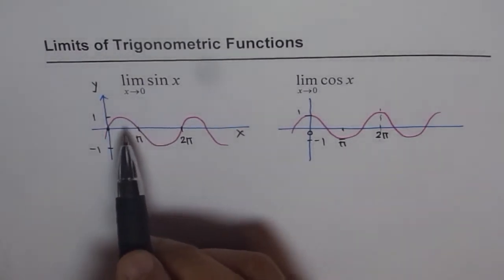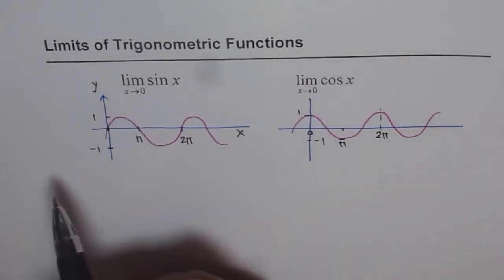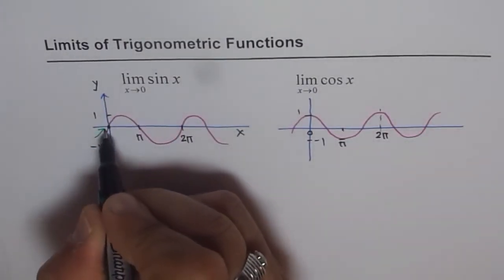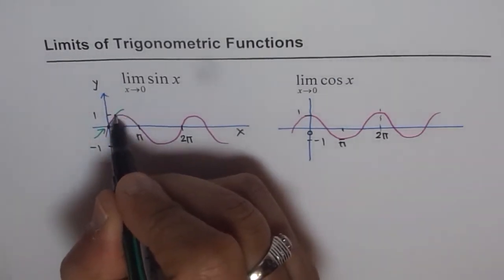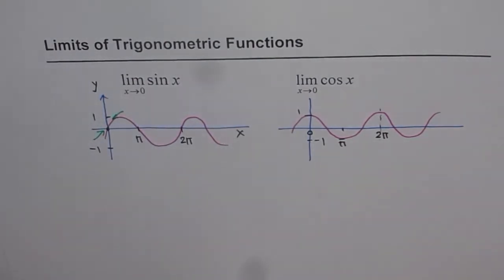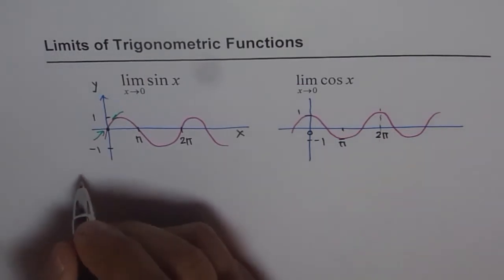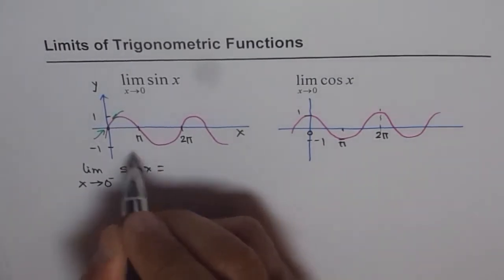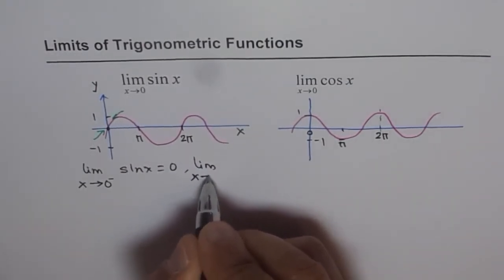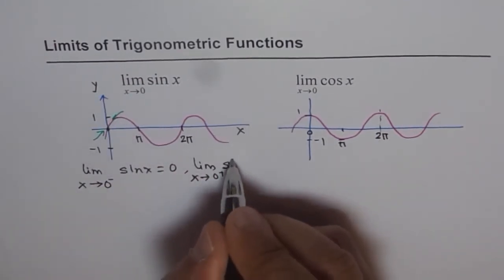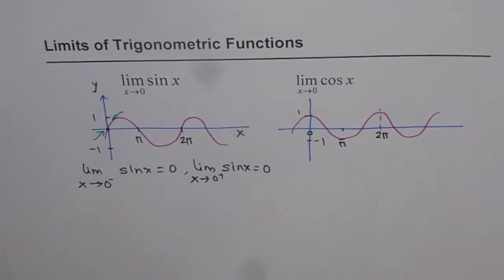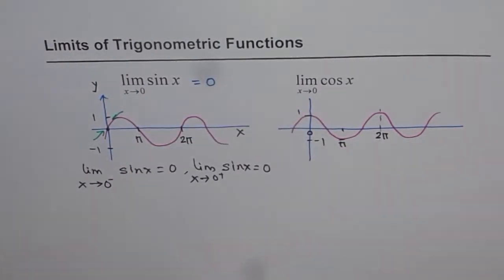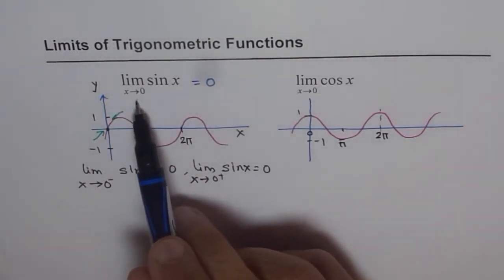Now let's find the limit of these functions as x approaches 0. Focusing on sine x: as we approach 0 from the left side, we approach 0. As we approach 0 from the right side, we also approach 0. So the limit of sine x as x approaches 0 from the left equals 0, and from the right also equals 0. Therefore, the limit exists and equals 0.